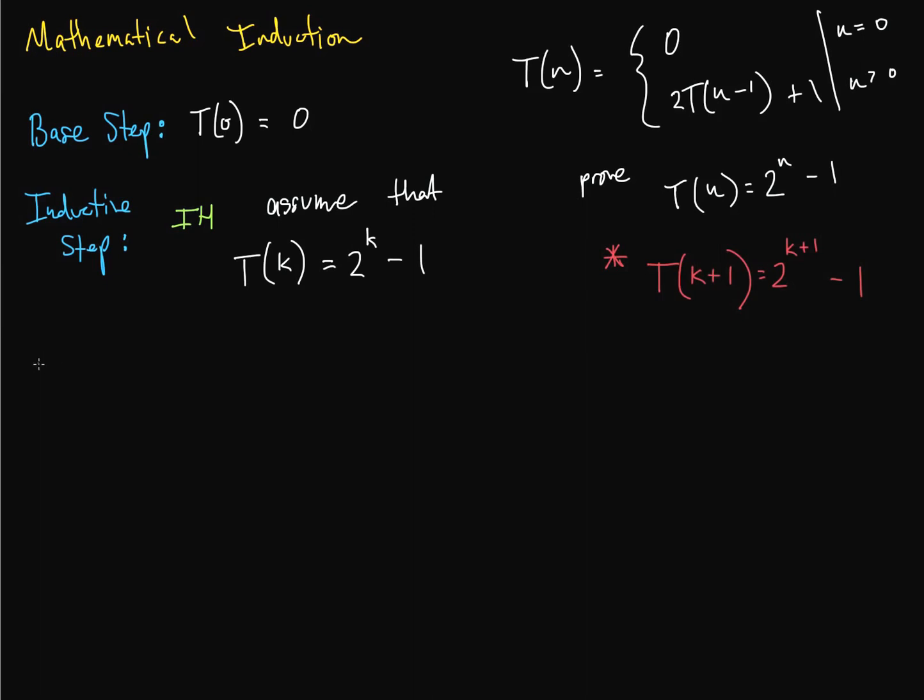Now, we start by plugging in k plus 1 here. So T(k plus 1) is equal to, and we're going to plug that into this equation here. So we have 2 times T, n is k plus 1 minus 1 plus 1. So we just plugged in T(k plus 1) into the second part here. We don't want to just jump right to this because we're trying to prove this.